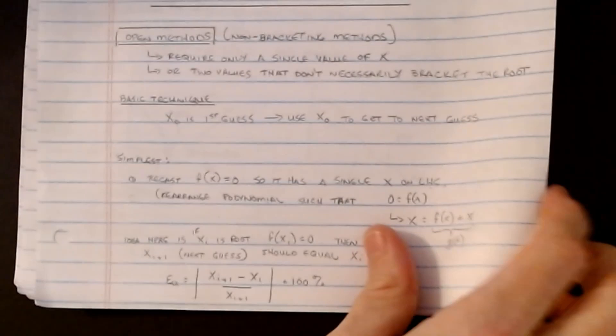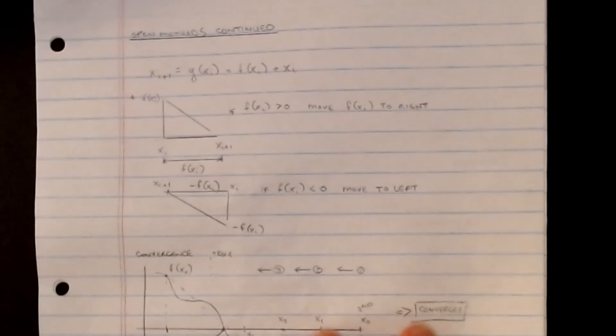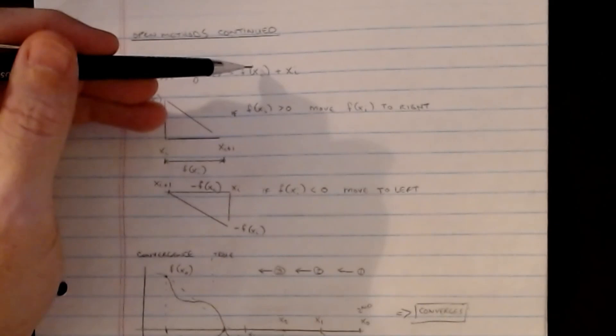So that's the basics of open methods. Our next guess x_(i+1) equals g(x_i), where g(x_i) is defined as f(x_i) plus x_i. So I'm plugging my previous guess x_i into that function g to produce x_(i+1). The general idea is: if f(x_i) is greater than zero, we move to the right; if f(x_i) is less than zero, we move to the left.